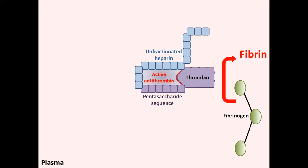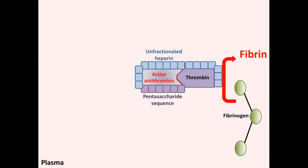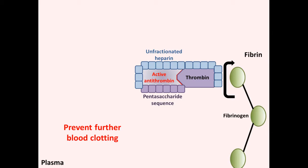Unfractionated heparin serves as a catalytic template to bridge thrombin and fibrinogen, which is responsible for its inhibition of fibrinogen to fibrin. Therefore, the end result is to prevent further formation of any clots within the plasma.